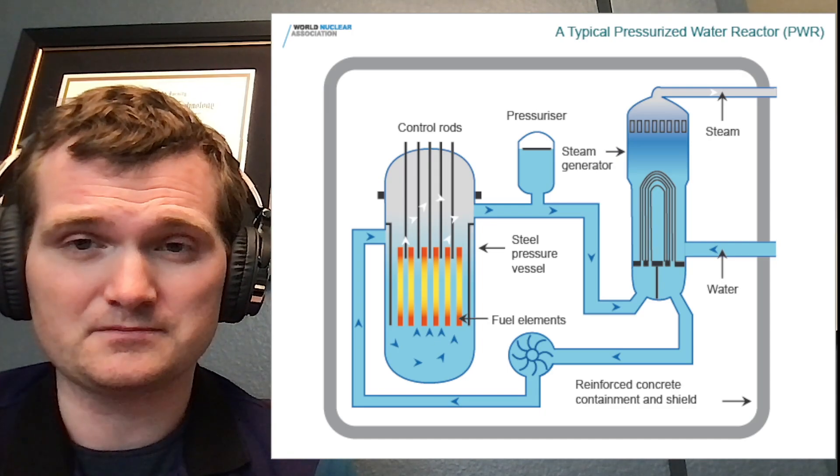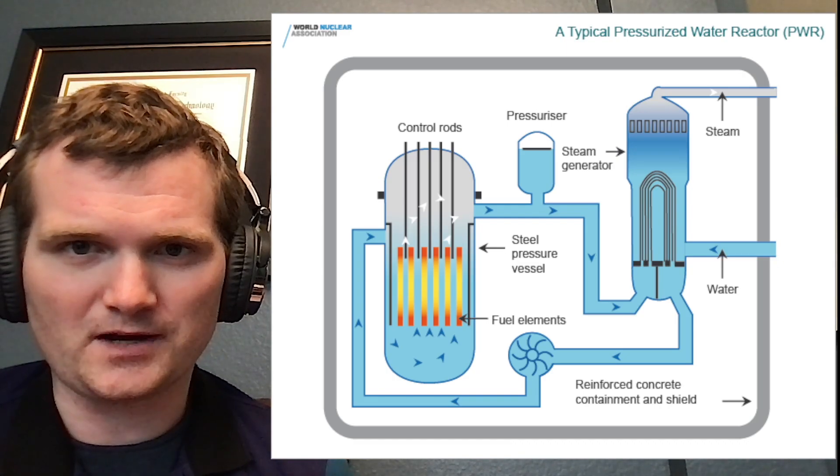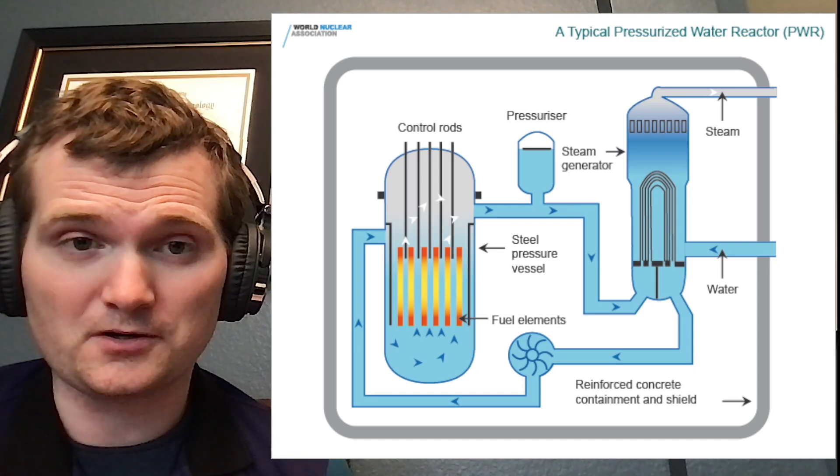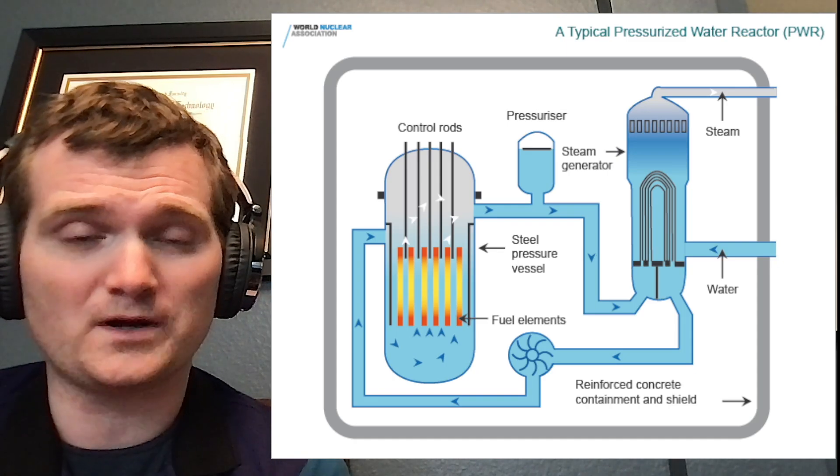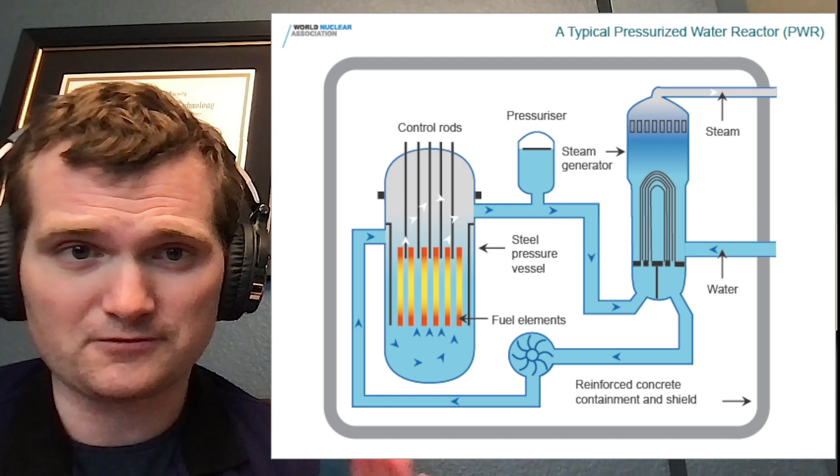One key feature of a pressurized water reactor is what you see in this diagram is the entire nuclear part of the plant. No radioisotopes get into the turbine or the secondary part of the plant. Keeps it very safely contained.